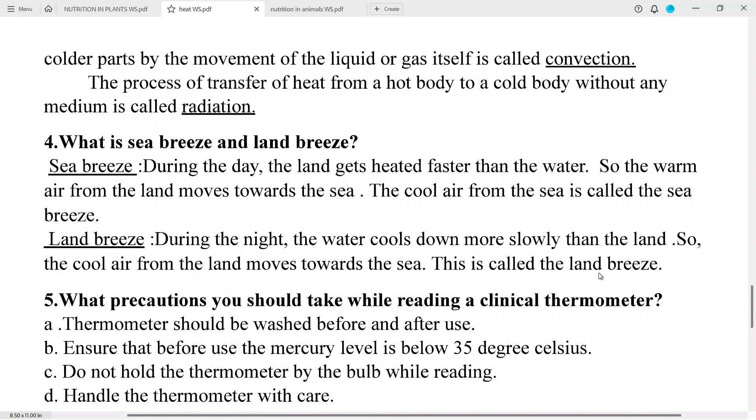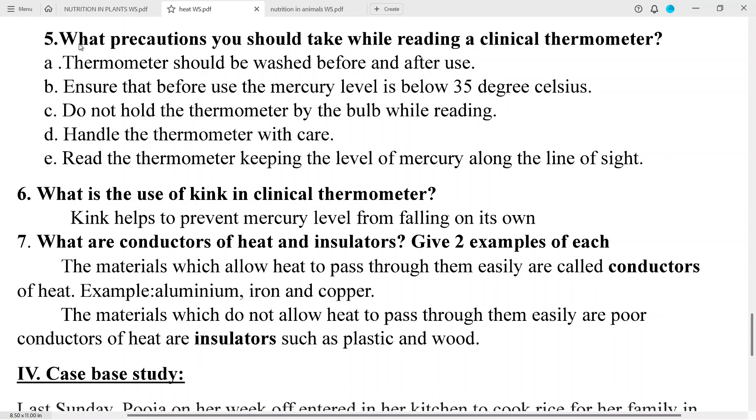Question 5: What precautions you should take while reading a clinical thermometer? A: Thermometer should be washed before and after use. B: Ensure that before use the mercury level is below 35 degrees Celsius. C: Do not hold the thermometer by the bulb while reading. D: Handle the thermometer with care. E: Read the thermometer keeping the level of mercury along the line of sight. Question 6: What is the use of kink in a clinical thermometer?